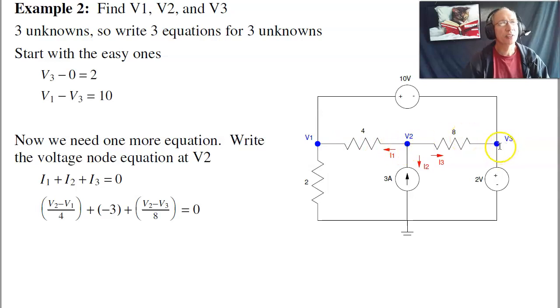And then I need three equations for three unknowns. Start with the easy ones. V3 minus 0 equals 2. That's one equation. This says V1 minus V3 is 10. The difference between the two nodes is 10. That gives me two equations. I need one more.